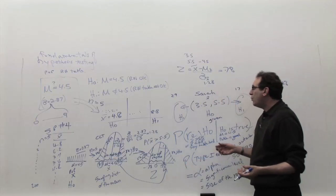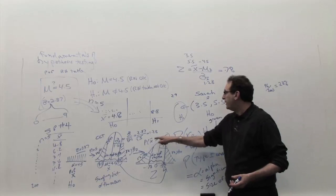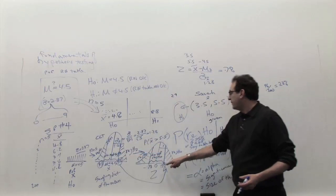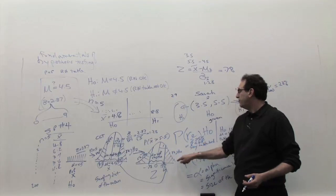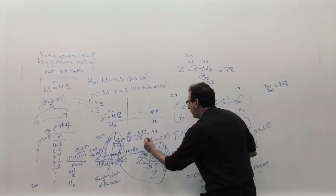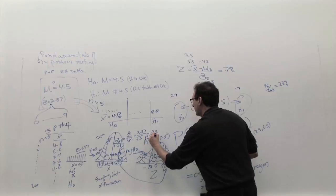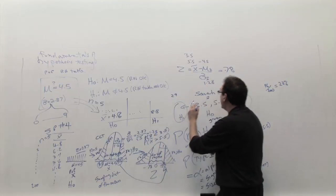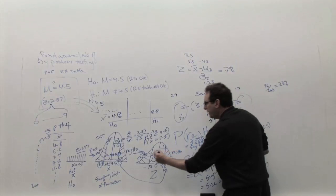So the only question is, how often would you end up with an X bar bigger than 5.5? That's the same as how often you get a Z score bigger than 0.78. Well, conversely, how often you get an X bar lower than 3.5? Well, that's how often you get an X bar lower than minus 0.78, which is this piece here.